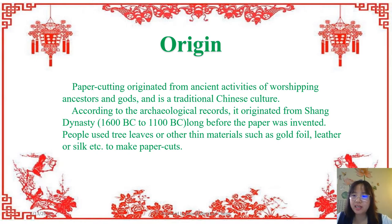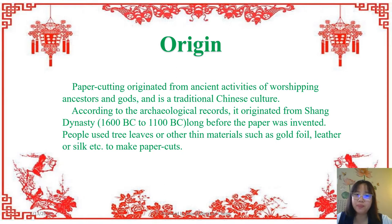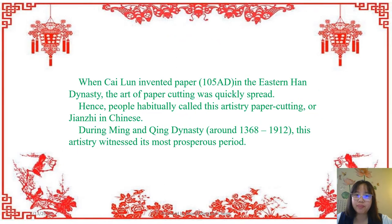起源 — origin. The Eastern Han Dynasty is when 蔡伦 invented paper, but paper cutting is much earlier — it is from the Shang Dynasty. 商朝。By that time there was no paper. 没有纸。So people used tree leaves — 树叶 — or other thin materials, 或一些更薄的材料，like leather or silk. 像皮革或丝绸。